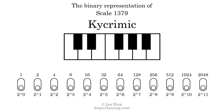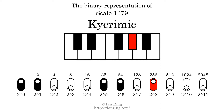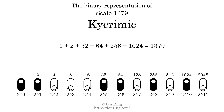The binary representation of this scale is determined by mapping tones of the scale to binary digits. Each binary digit represents a power of 2. To get the scale number, we add the powers of 2 together. The powers of 2 that are present in the scale, all added together, equals 1379. That is why the scale number, in decimal, is 1379.